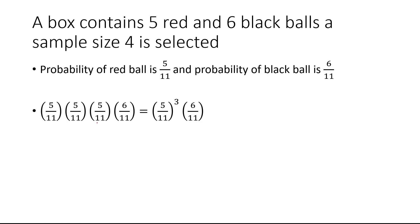These probabilities are the same because we put the ball back in the pile, so the probability never changes. Finally, the probability of selecting a black ball is six over eleven. This is basically five over eleven cubed times six over eleven, which is 750 over 14,641.